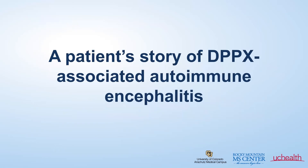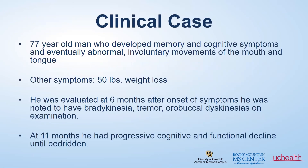As we come to the end of this episode, I want to leave you with a patient's story of DPPX-associated autoimmune encephalitis. This is a story of a 77-year-old man who developed memory and cognitive symptoms, and eventually this led to abnormal involuntary movements of the mouth and the tongue. He was evaluated at six months after the onset of these symptoms and was found to have bradykinesia — slowed movements — as well as a tremor and oral buccal dyskinesias, or these abnormal mouth movements, on his exam.